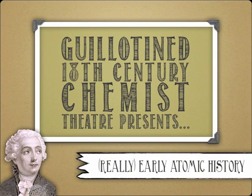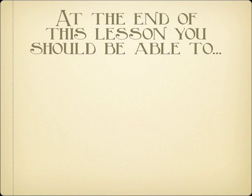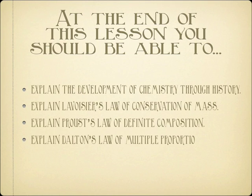Hello and welcome back to Guillotine to 18th Century Chemist's Theater. Today we're going to start a small unit on early atomic history. We'll get to modern atomic theory later, but let's talk about some of the foundations that led us to where we are today. We're going to start with the humble beginnings of chemistry when it was just alchemy or proto-science, and then get to some of the contributions of Lavoisier, Proust, and Dalton, which gave chemistry a lot of its legitimacy as a true science.